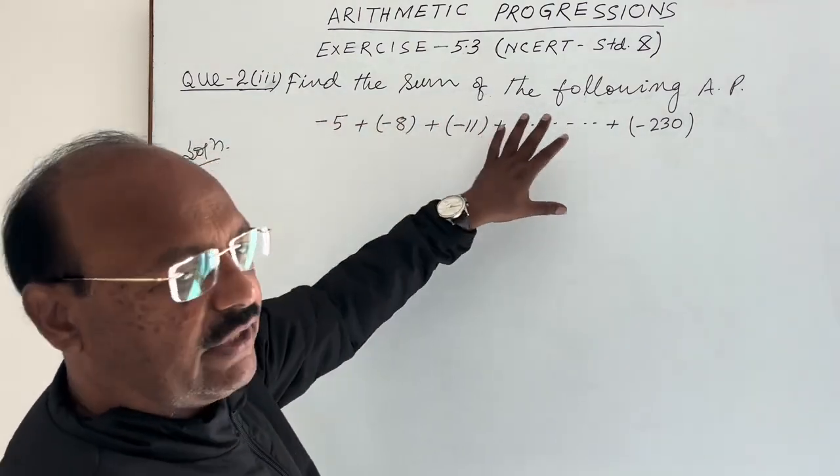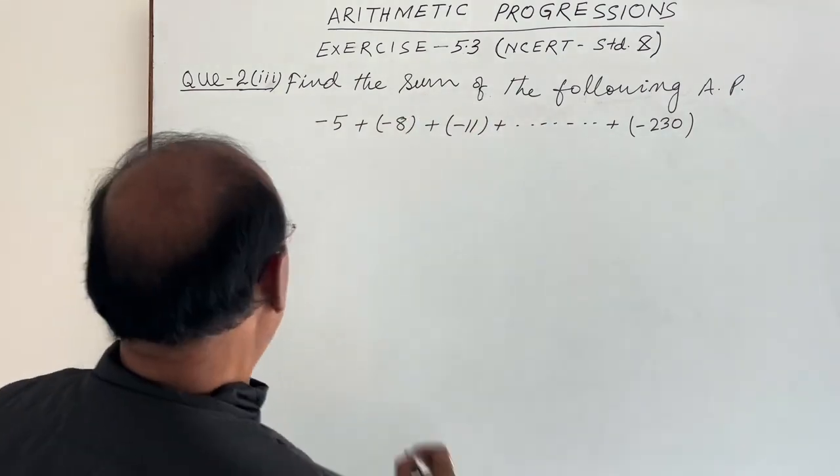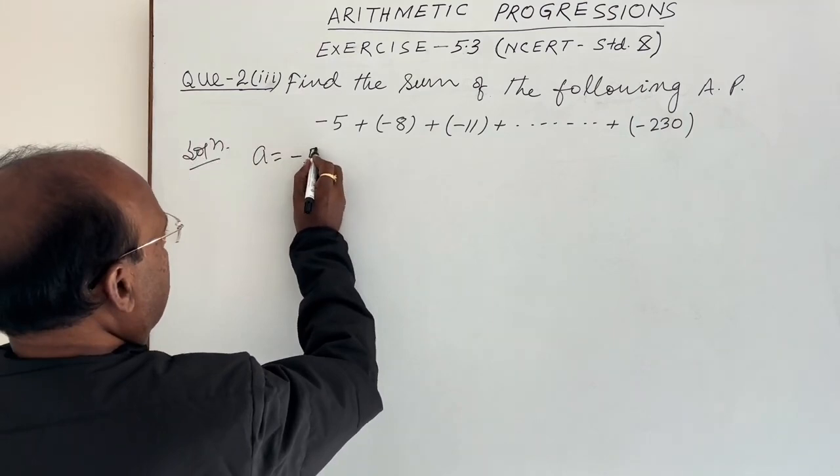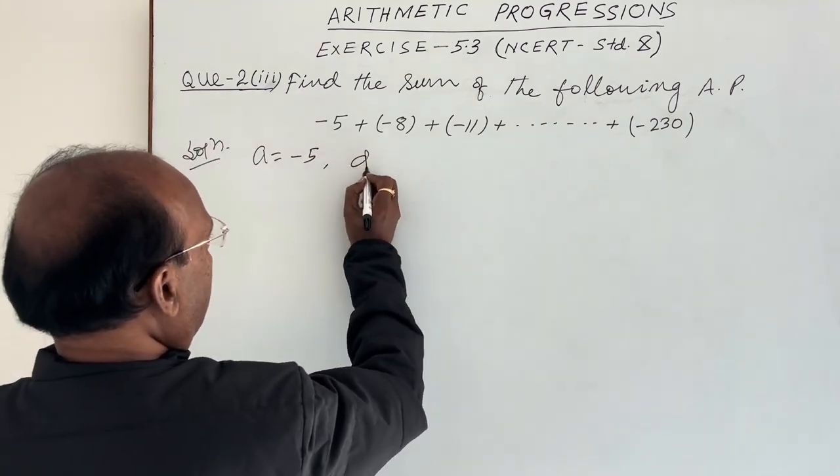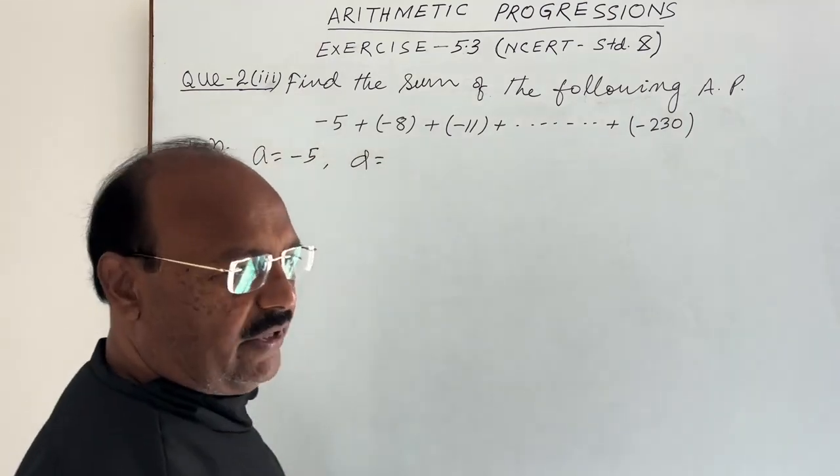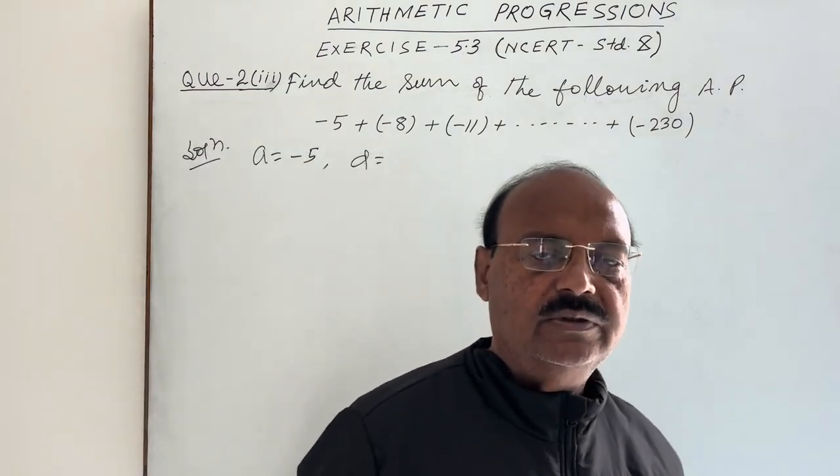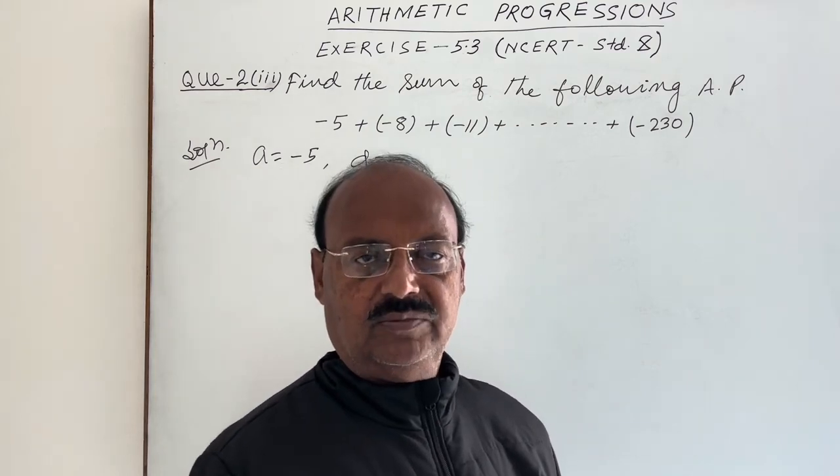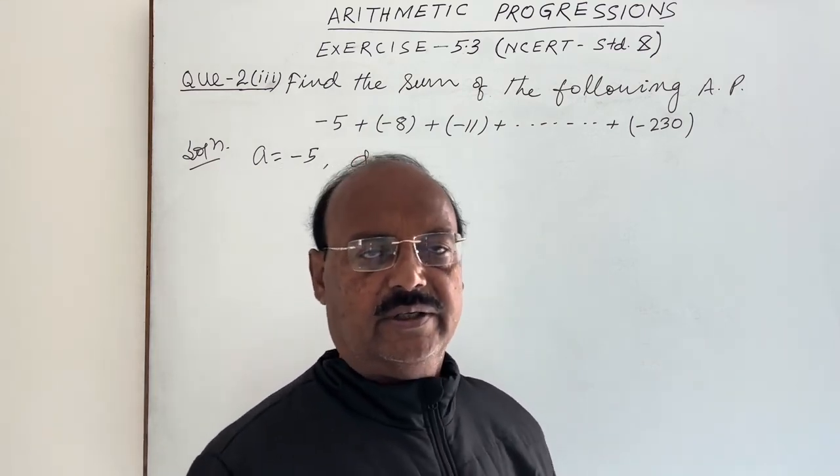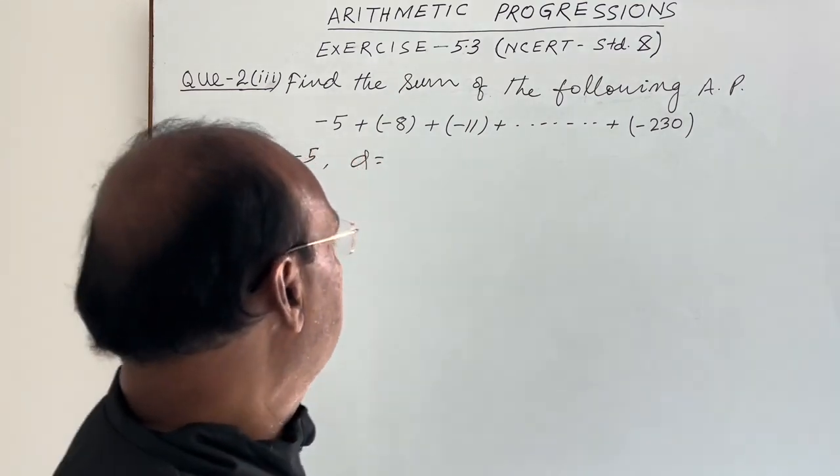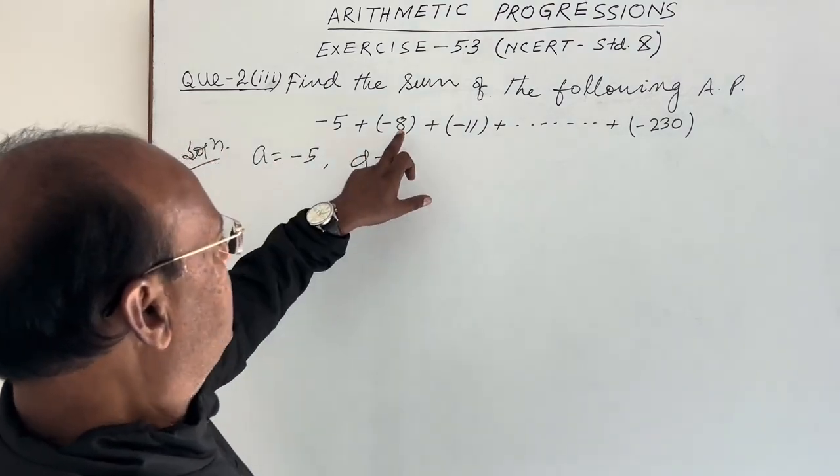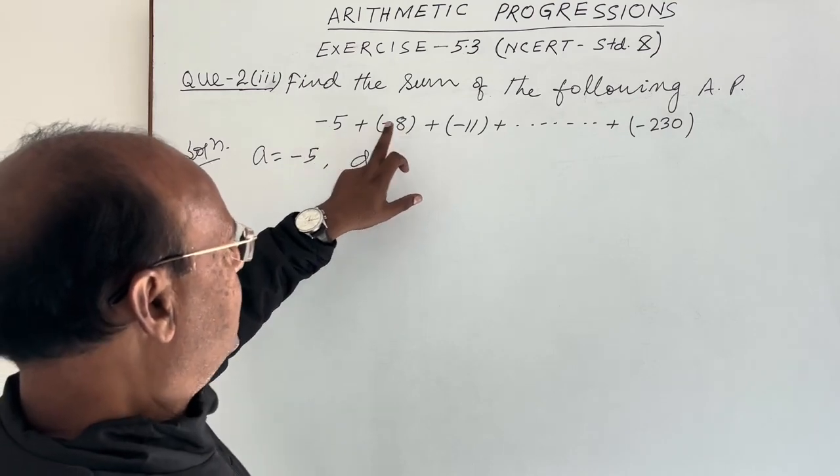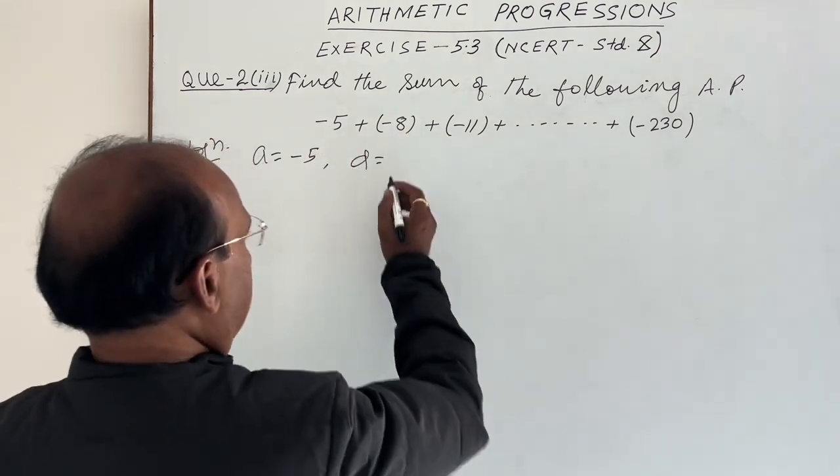First of all, let us see what is given in this arithmetic progression. The value of A, the first term, is given as minus 5. D is the common difference which is equal to the difference of two consecutive terms, meaning second term minus first term or third term minus second term and so on. So here minus 8 minus of minus 5 means minus 8 plus 5, this is equal to minus 3.